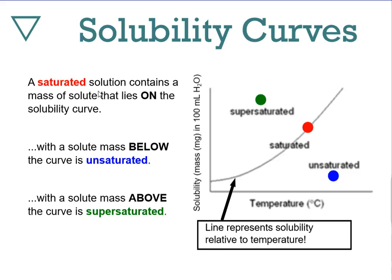Now let's apply these terms to the solubility curve graph. The y-axis shows solubility, usually in grams per 100 milliliters of water, and the x-axis shows temperature in Celsius. The line drawn represents exact saturation at each temperature. A point on the line is a saturated solution. A point below the line is an unsaturated solution. A point above the line means more solute is dissolved than should be possible — that's a supersaturated solution.